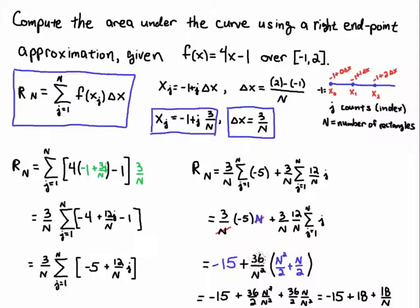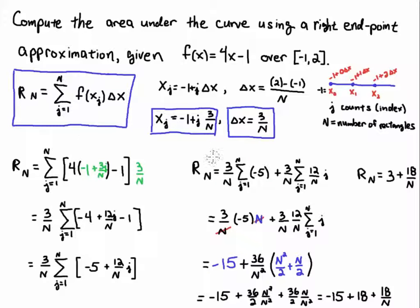The next step is to take thirty-six over n squared and distribute it into the power sum. So we have minus fifteen plus thirty-six over n squared times n squared over two, giving thirty-six over two, and the n squareds cancel. Plus thirty-six over two times n over n squared leaves n in the denominator. Simplifying: minus fifteen plus eighteen plus eighteen over n, which gives us three plus eighteen over n.